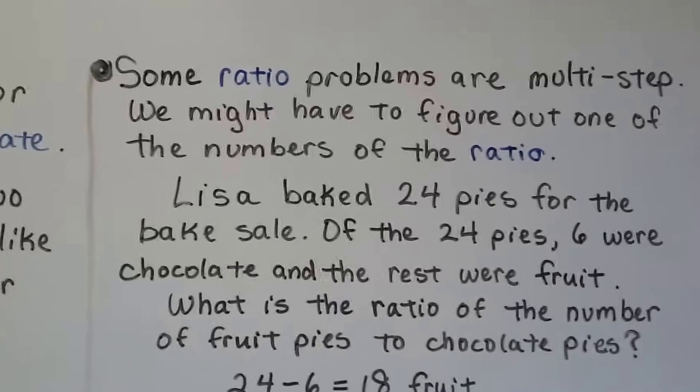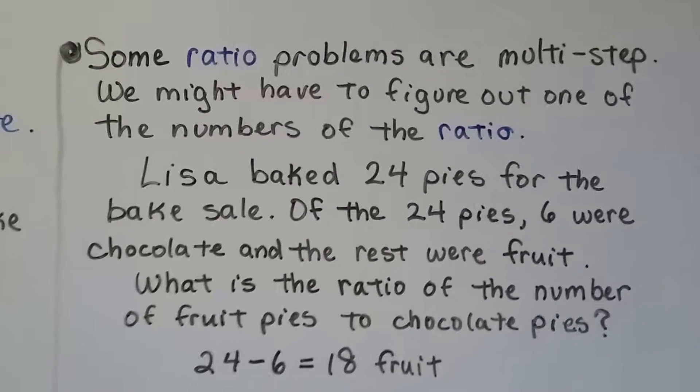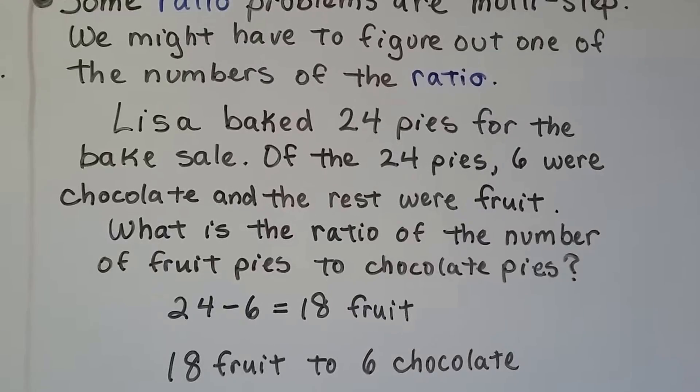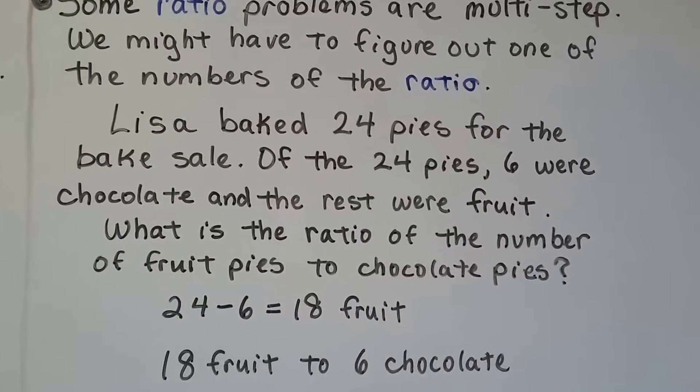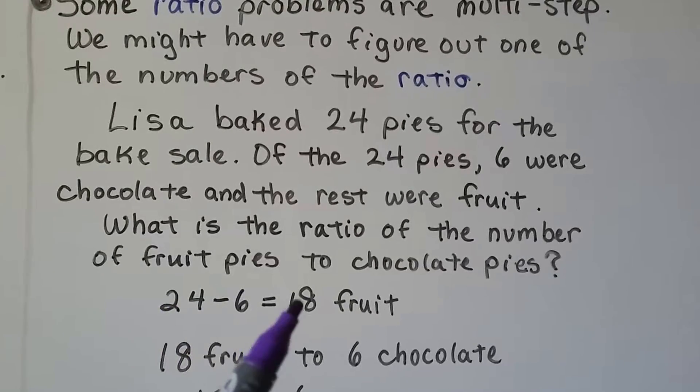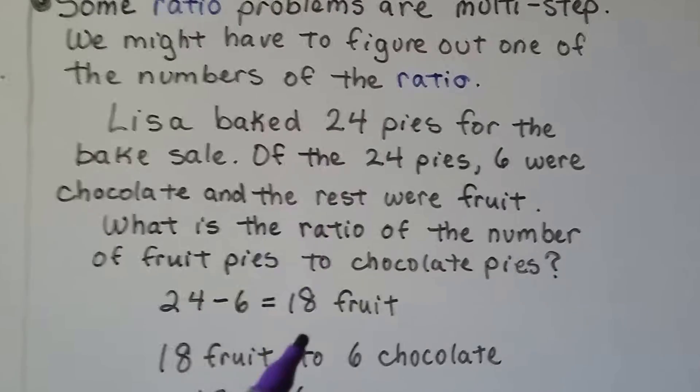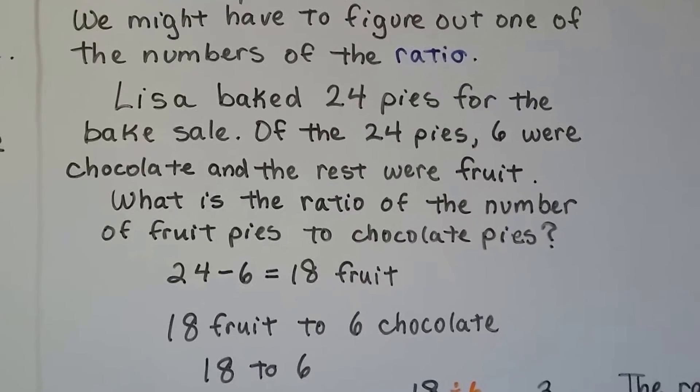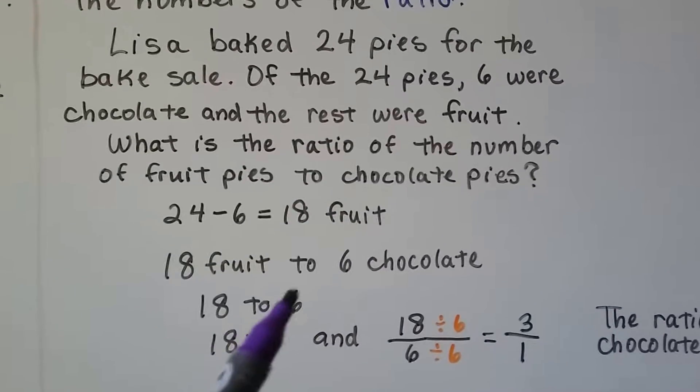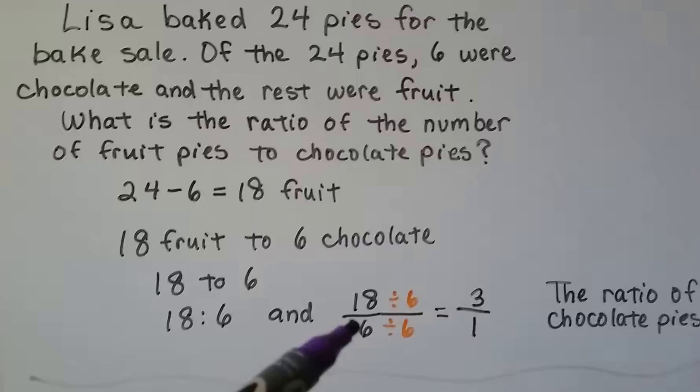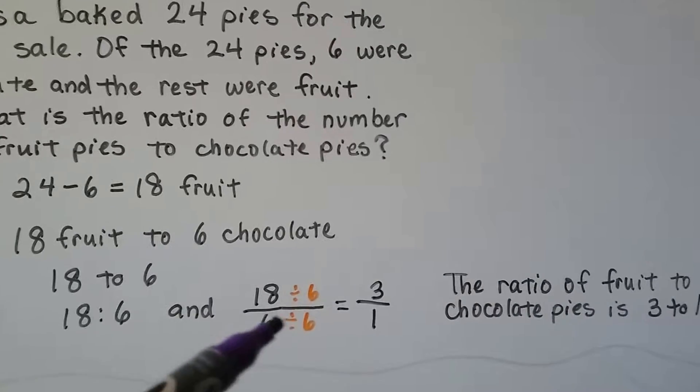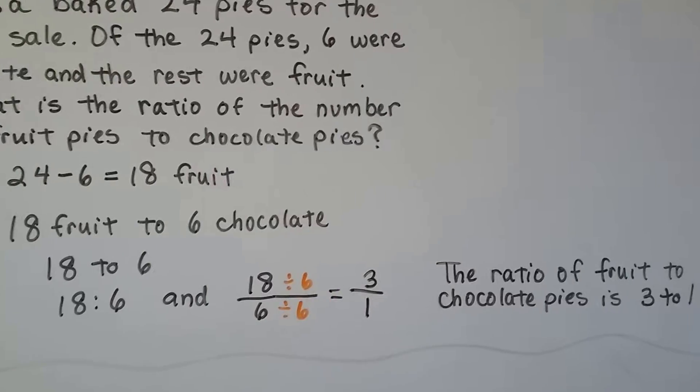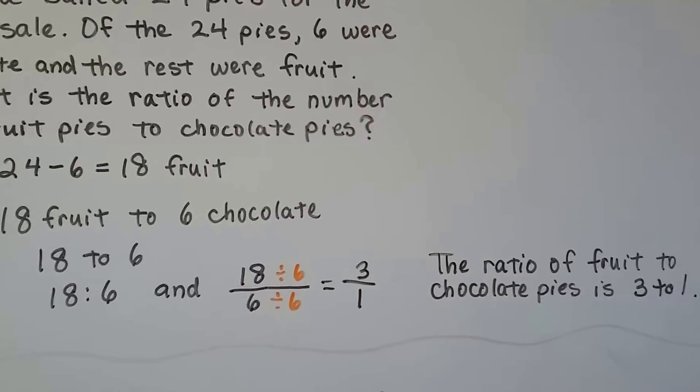Some ratio problems are multi-step. We might have to figure out one of the numbers of the ratio. Lisa baked 24 pies for the bake sale. Of the 24 pies, 6 were chocolate and the rest were fruit. What's the ratio of the number of fruit pies to chocolate pies? We have to do 24 minus 6 to find out that there were 18 fruit pies. So there were 18 fruit to 6 chocolate - 18 to 6. We can turn this into a unit rate by dividing the denominator by 6, so we have to divide the numerator by 6. We'll have 3 to 1. The ratio of fruit to chocolate pies is 3 to 1.